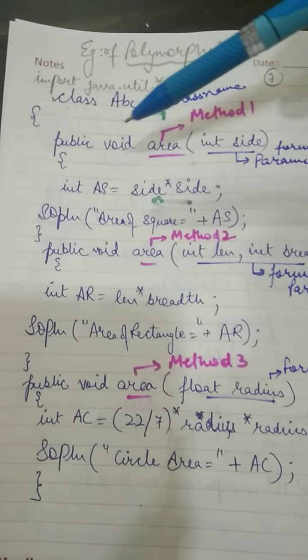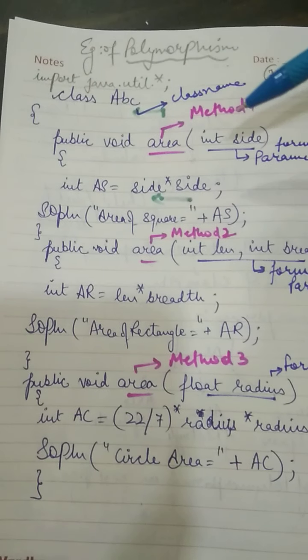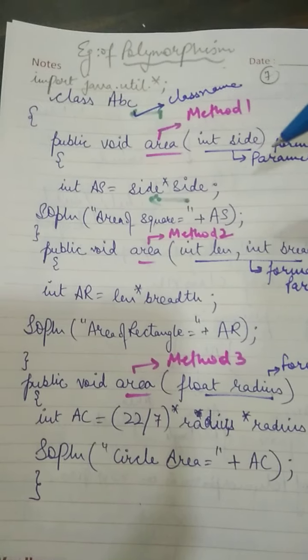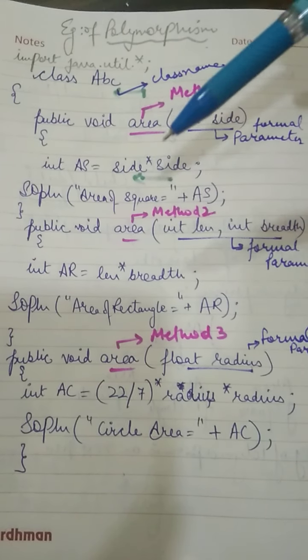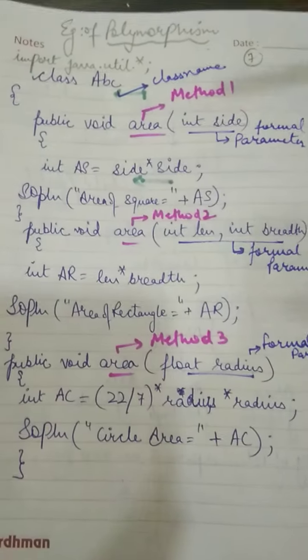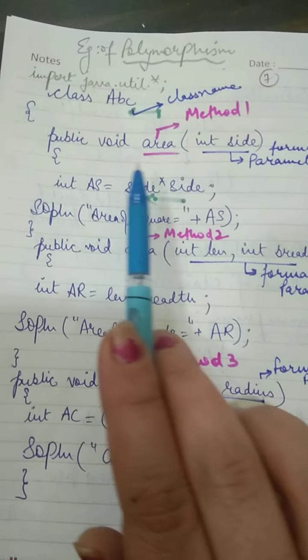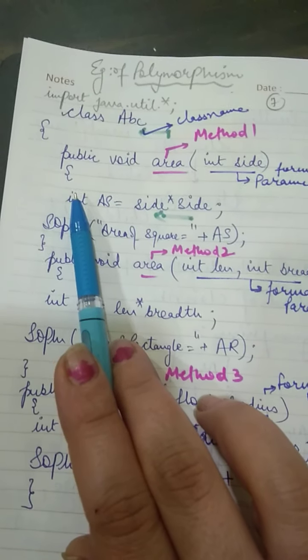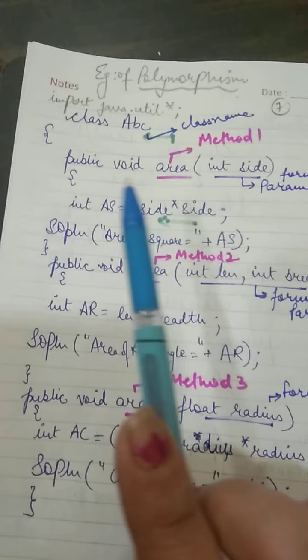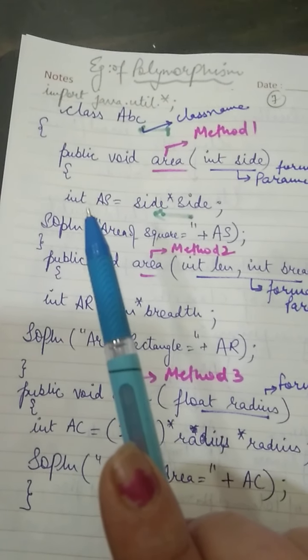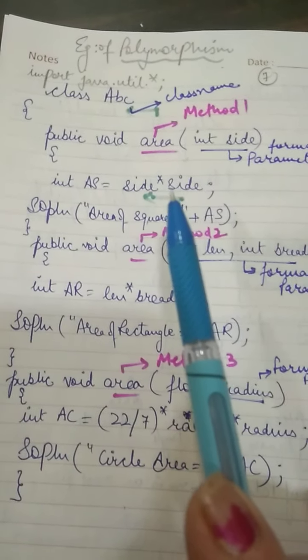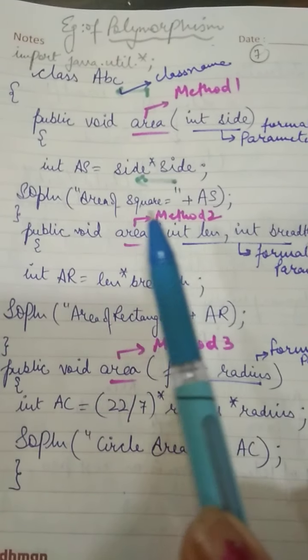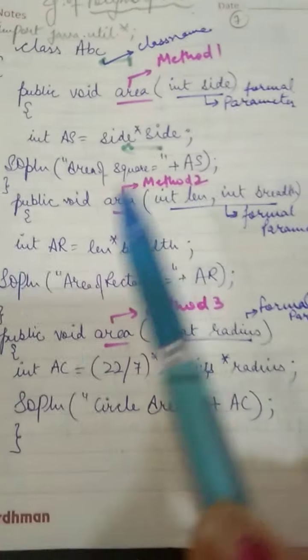This is the line to define a method: public void area. area is the first method, and in the round bracket it is taking an argument, or parameter. Parameters are the values which we supply to the method to get the result. In the method body, we are calculating the area of a square — side * side is the formula, and side is given by the parameter. Using a System.out.println statement we are printing the output for the square's area.